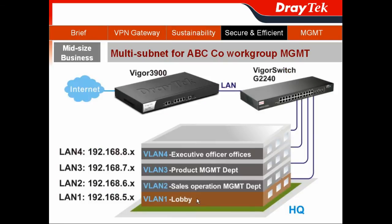In the ABC Company scenario, we can separate the 4-level buildings by different LANs with different VLAN IDs. I will now show you the configuration.